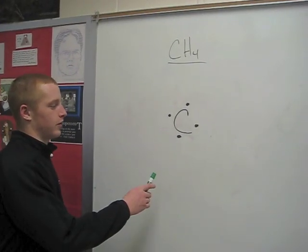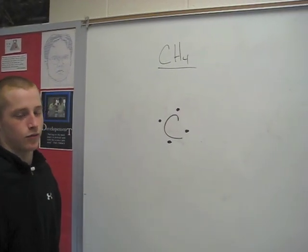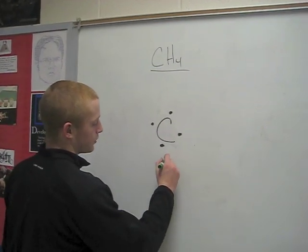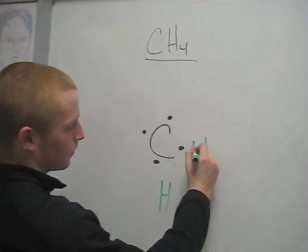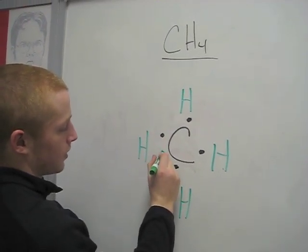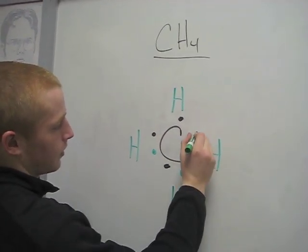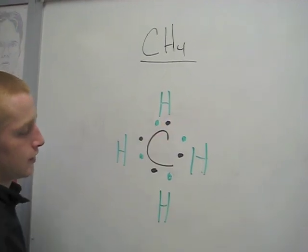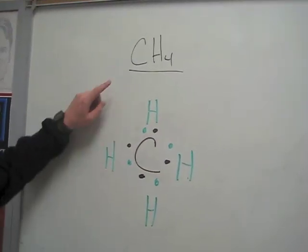Although carbon only has four valence electrons it still needs to obey the octet rule. So when you bond it with four hydrogen, each one of those hydrogen adds another valence electron to the carbon. Giving it eight which is what it needs to obey the octet rule. This is known as CH4 or methane.